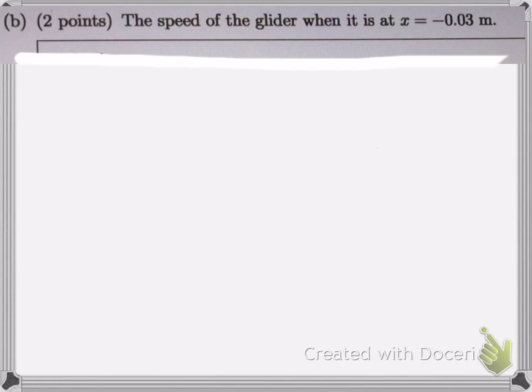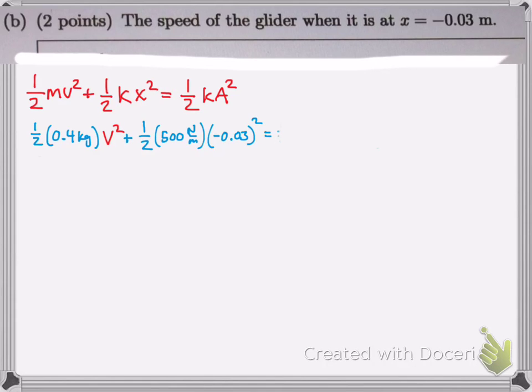Now we're going to find the speed of the glider when it's at x equals negative 0.03 meters. So we can do energy again: 1 half m v squared plus 1 half k x squared equals 1 half k A squared. It's the total mechanical energy here. So we have kinetic plus potential is total mechanical energy. And we can just solve for v, because we're looking for the speed, right? And plug in x at negative 0.03.